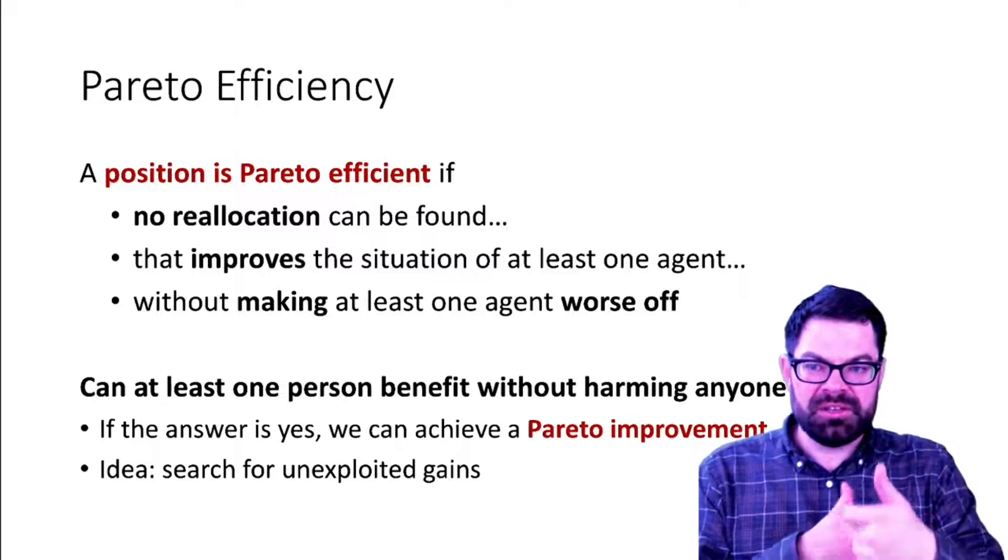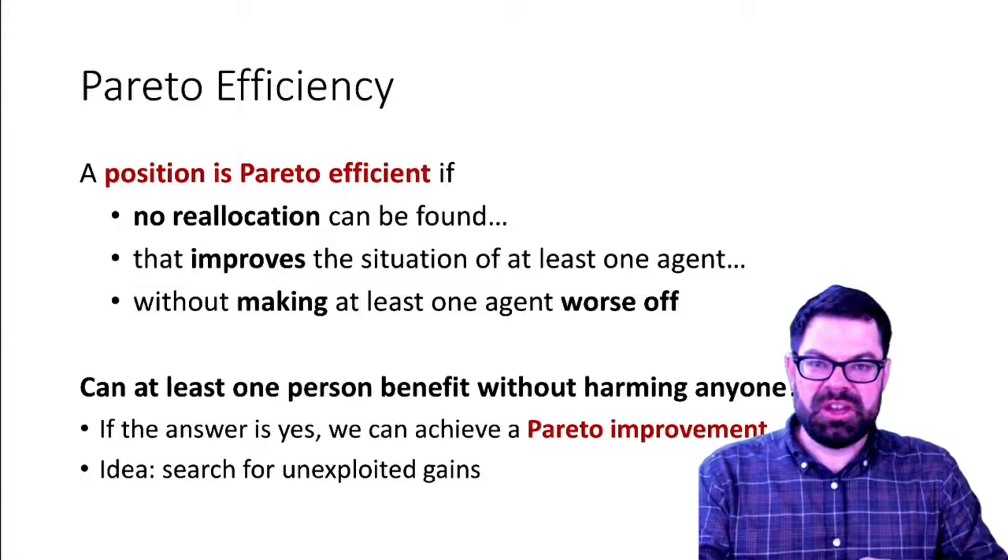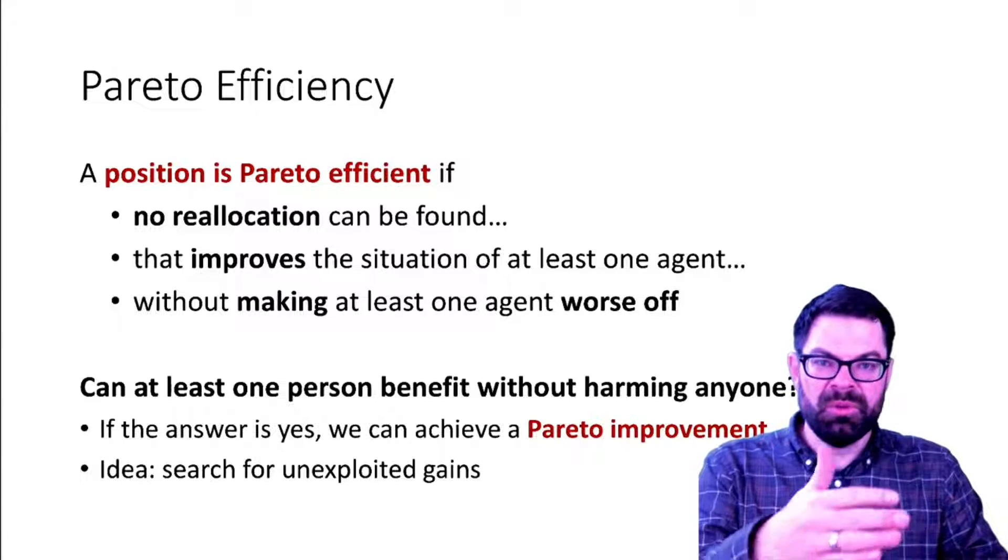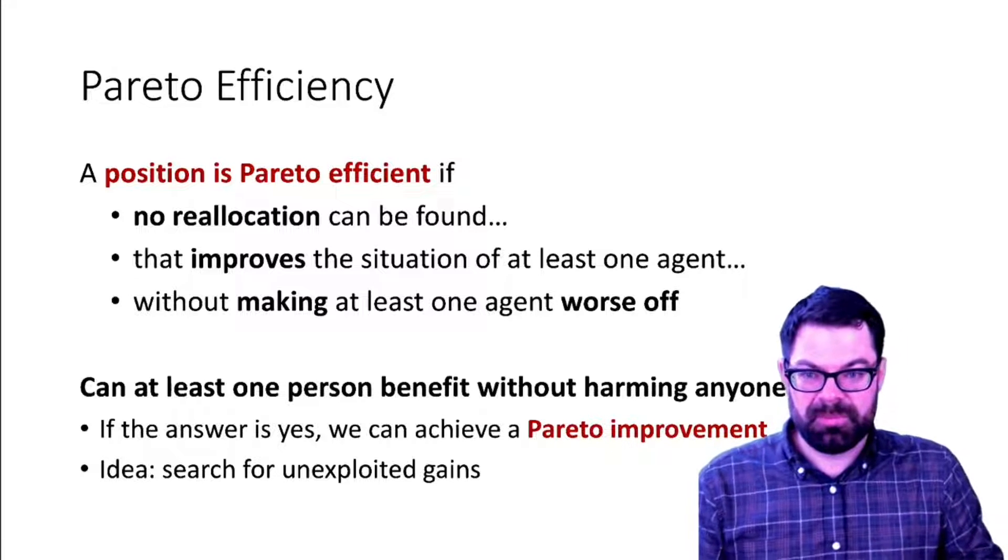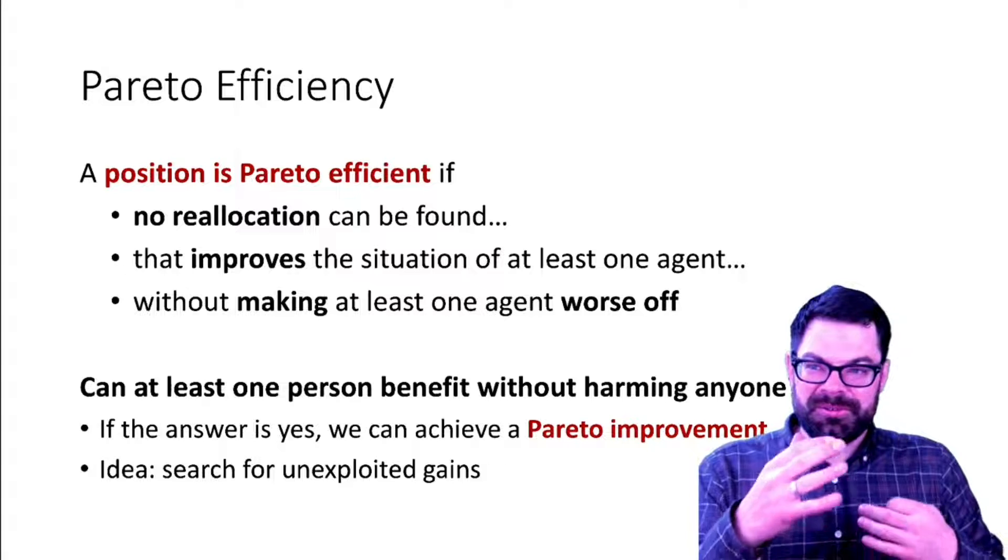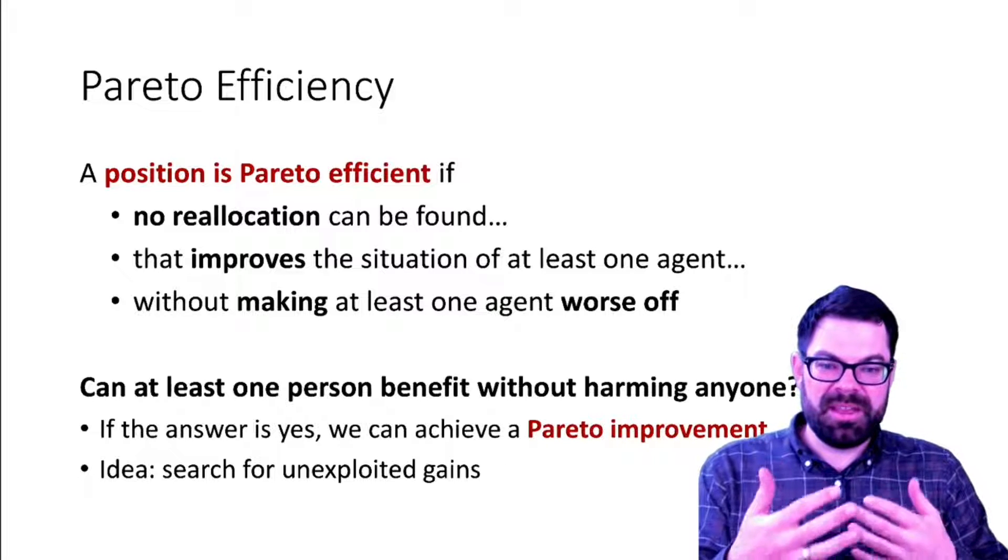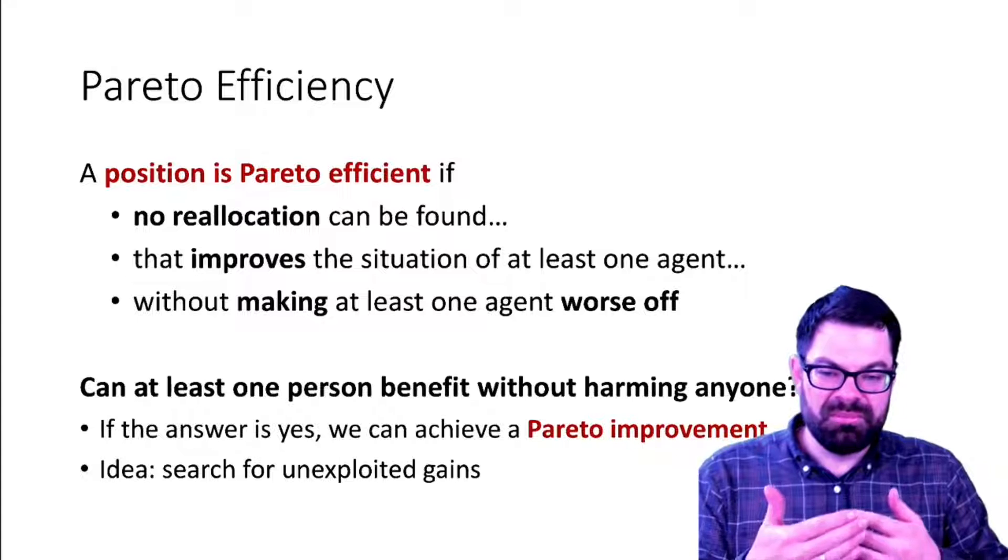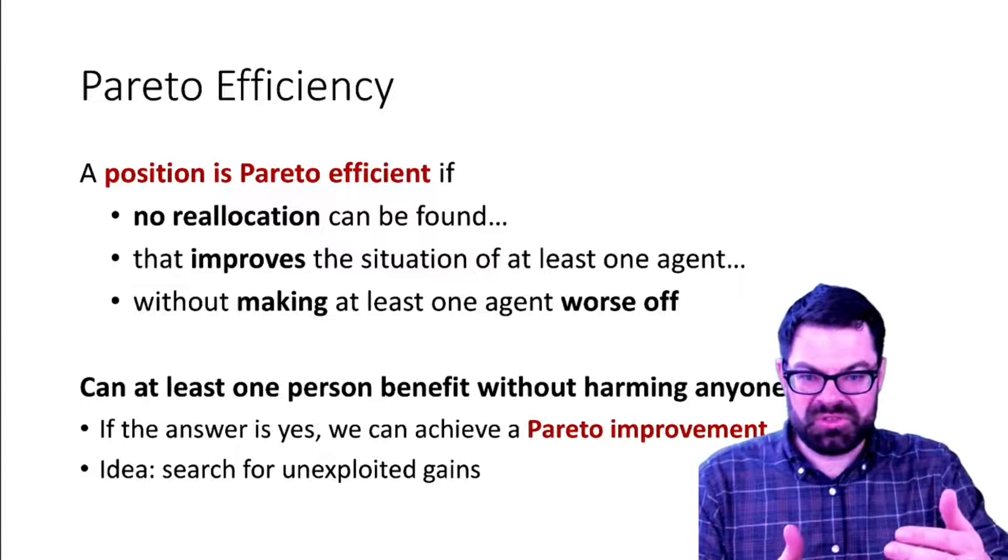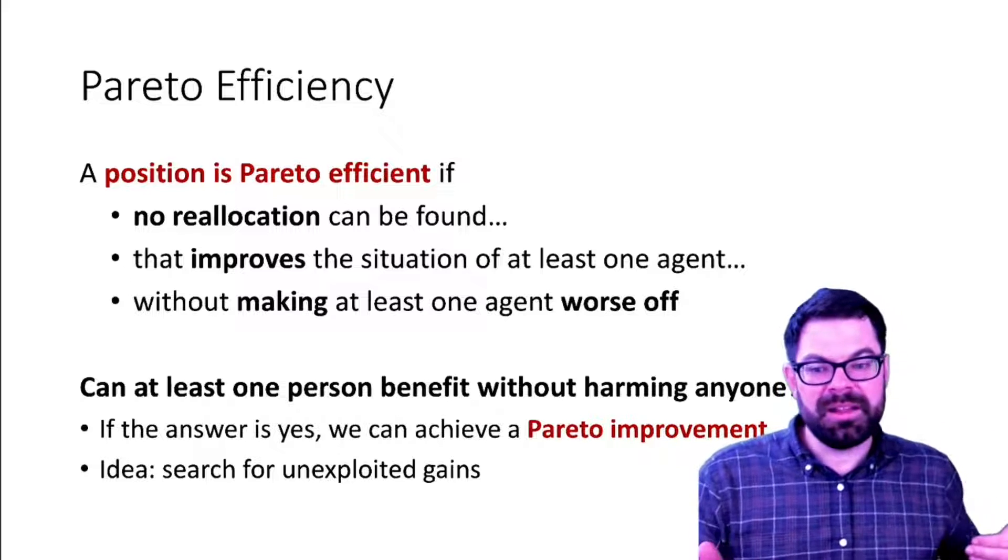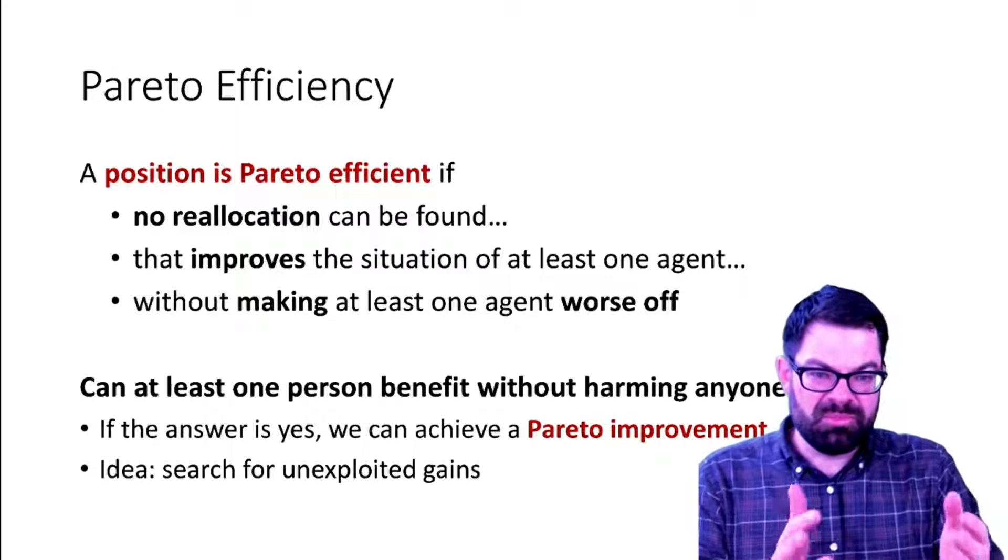very often you have potential gains from exchange. So at least one person, if not both, can be made better off through exchange. And so that fact of the two of them being made better off is called a Pareto improvement. So if we can improve the situation of one person without harming anyone else, that's called a Pareto improvement.